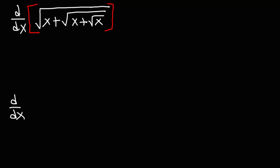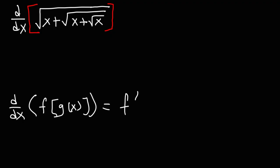Here's how you could use the chain rule. If you want to find the derivative of a composite function f of g of x, what you need to do first is find the derivative of the function on the outside, which will be f prime, while keeping the inside the same, times the derivative of the inside function. That's the process by which we find the derivative of a composite function.